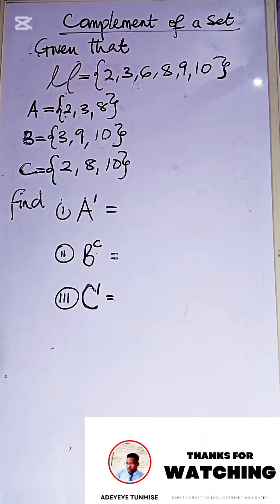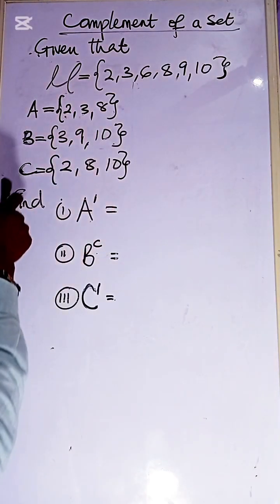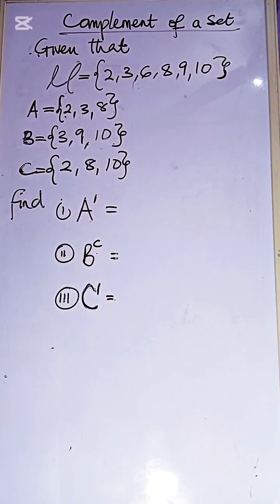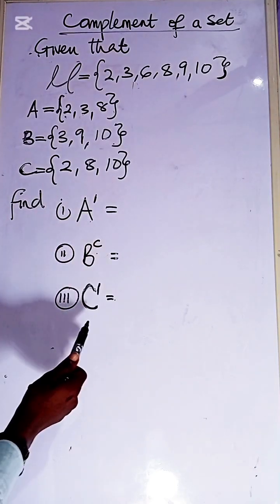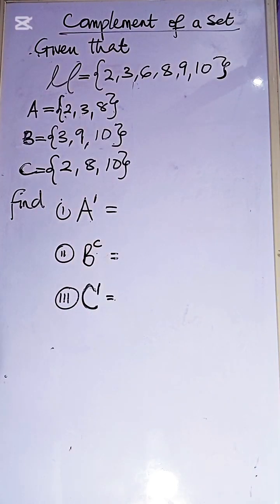Then we have our set A to be 2, 3, 8, our set B to be 3, 9, 10, and set C to be 2, 8, and 10. Then we have been asked to calculate or find our A prime, our B complement, and also our C prime.